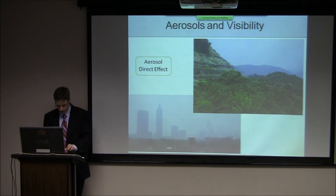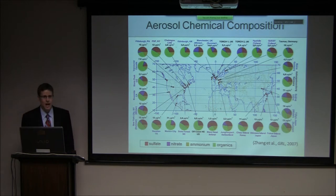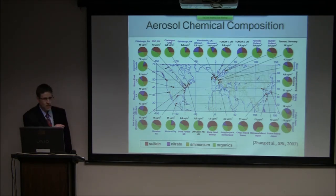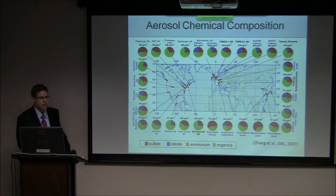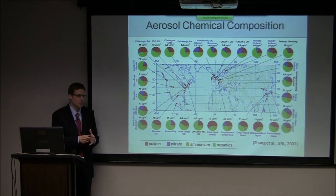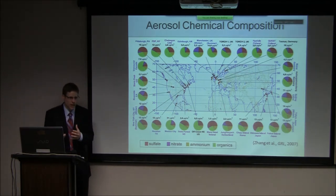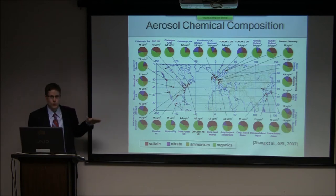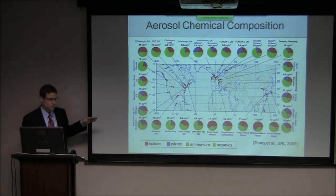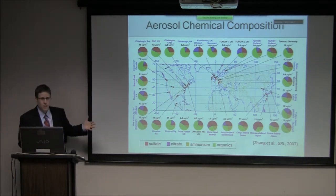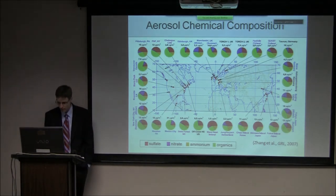Now switching to properties of particles in the atmosphere, starting with chemical composition. This figure shows chemical composition measured at many locations around the world. The green portion of each pie represents organic compounds — not chemically specific, but the sum of organic compounds in the aerosol phase. At most locations around the world, these organic compounds are the largest fraction of aerosol mass. It's these organic compounds that my research focuses on, because of their abundance in the atmosphere.